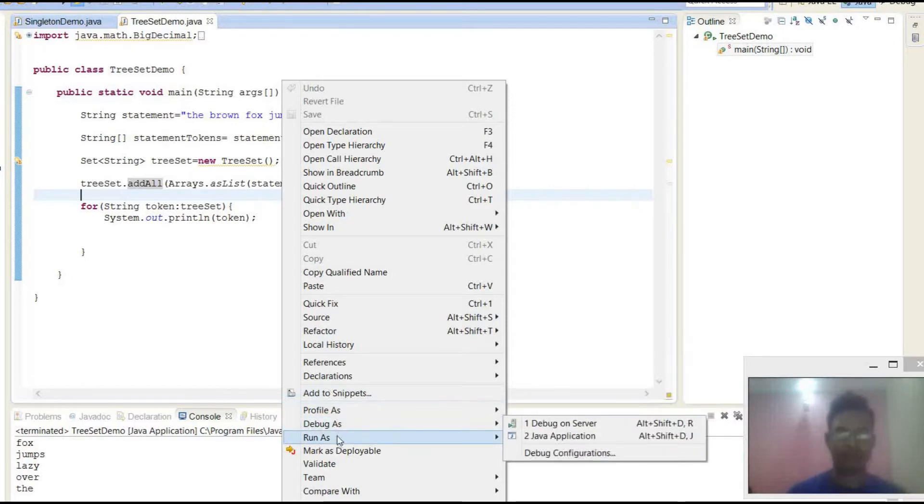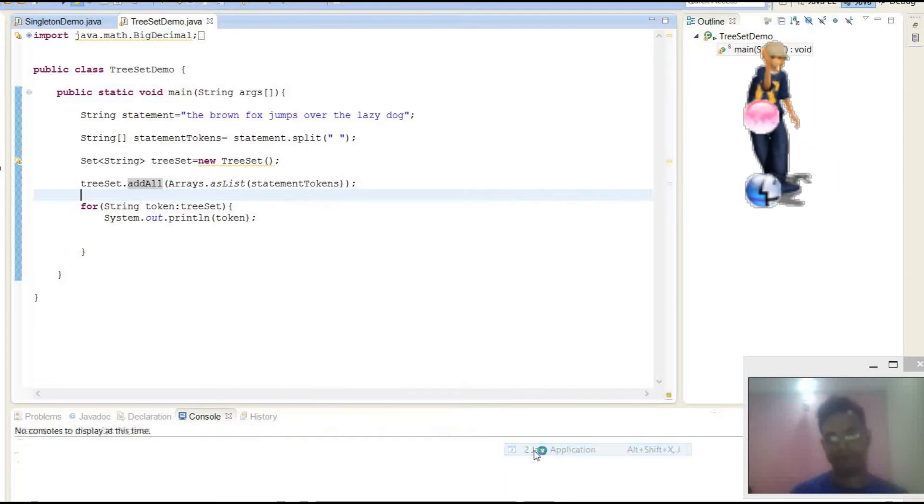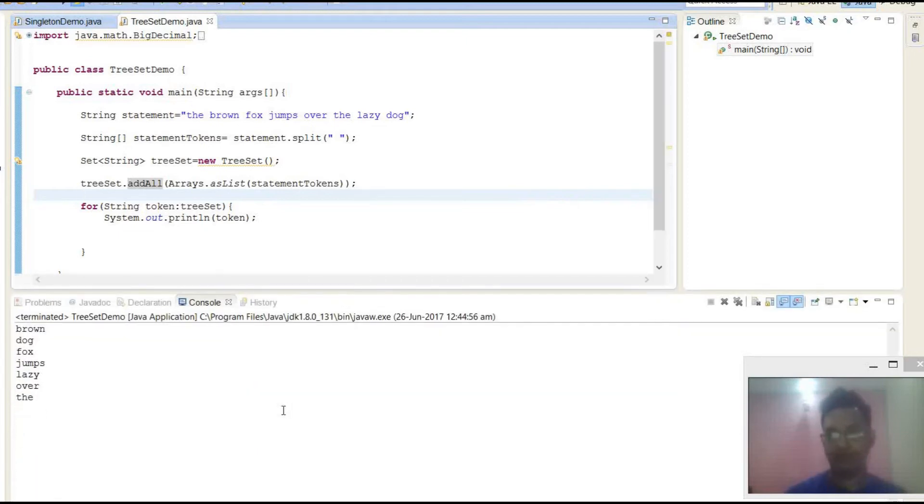So let's run it and see the result. Here we can see elements are sorted out in their natural alphabetical order: 'be brown dog fox jumps lazy over the'.